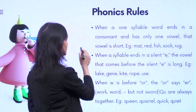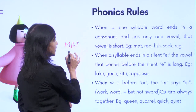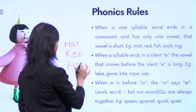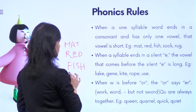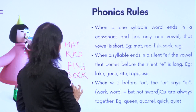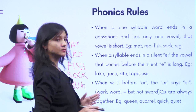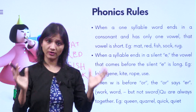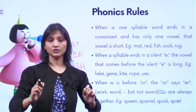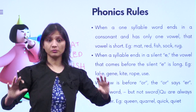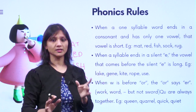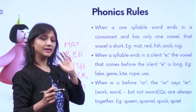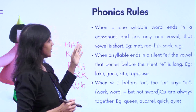The examples given are: mat, red, fish, sock, and rug. These are all one-syllable words. 'Fish' — you cannot say 'fee-sh'; 'fee' and 'sh' do not make any meaningful word if pronounced alone. So it's one syllable — that is the breaking of the word. You cannot break these words; you can break and read for phonics practice, but the meaning will be different.